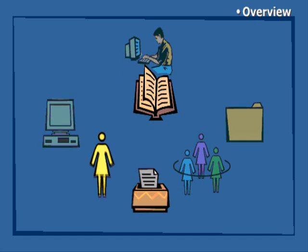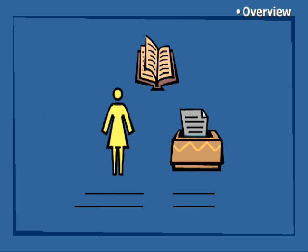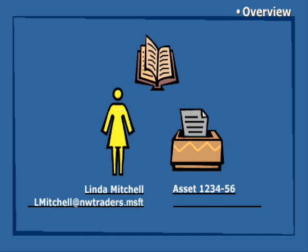Active Directory stores information about resources in a hierarchical structure. It contains objects that represent the different types of network resources, such as users, printers, and so on. Each object has attributes, such as a user's first name, last name, and email address, or a printer's asset number and location.